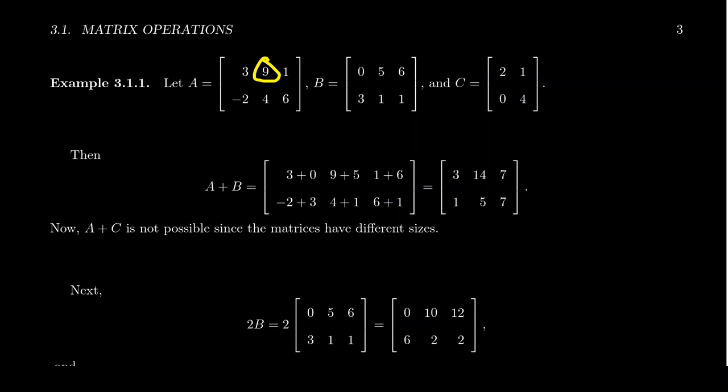Then we do the 1-3 position, which is 1 plus 6, which is a 7. Doing the second row, we're going to take the 2-1 position for both matrices, negative 2 plus 3, which is equal to 1. We then take the 2-2 position, which will be 4 plus 1, which is a 5. And then lastly, we're going to take the 2-3 position, 6 plus 1, which gives us a 7. And so we just add together matrices term by term, exactly how we did it with vectors.